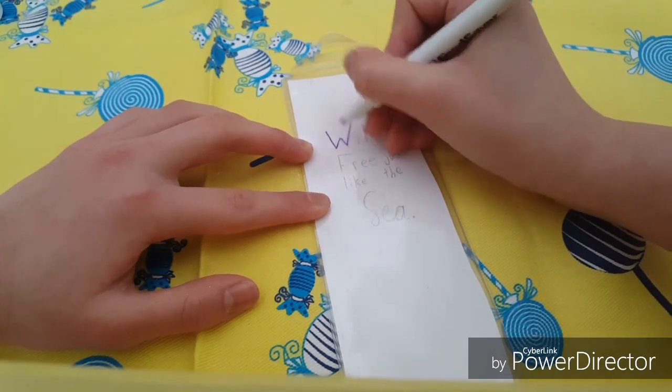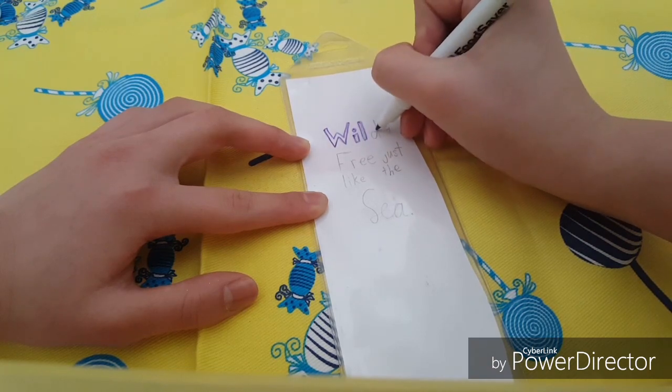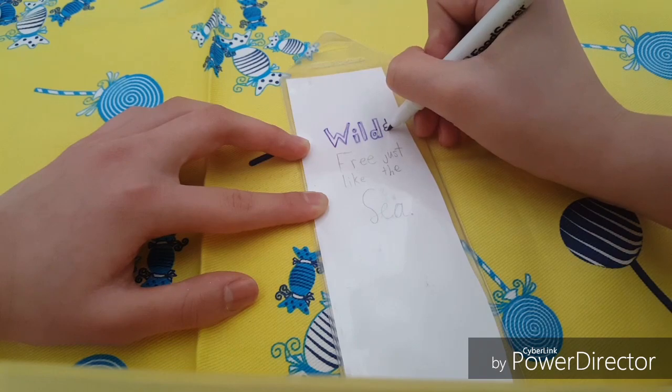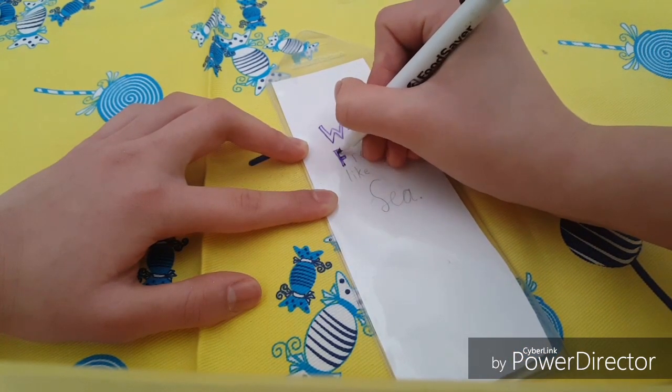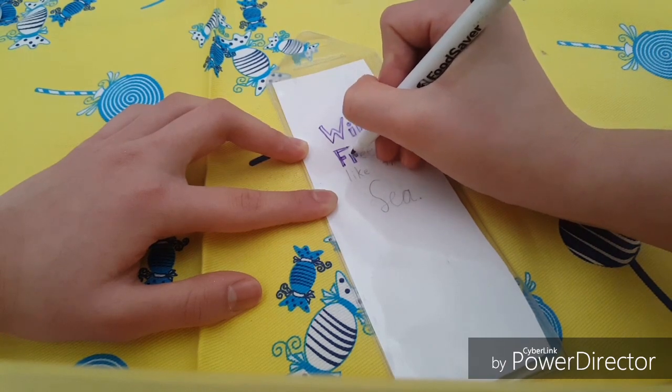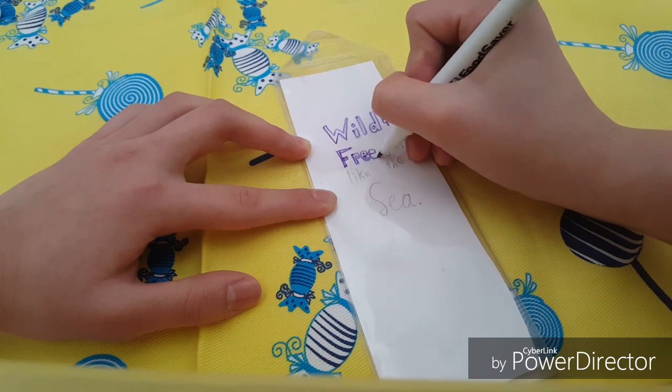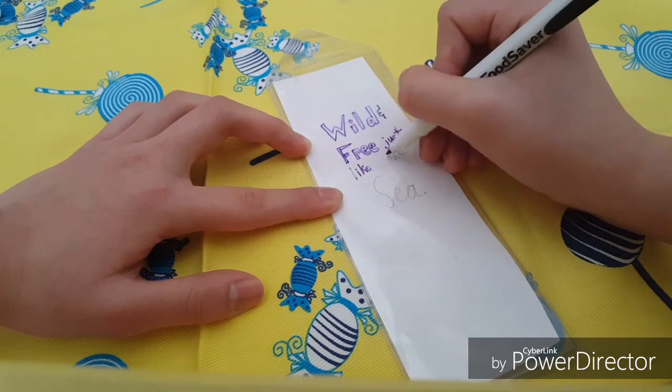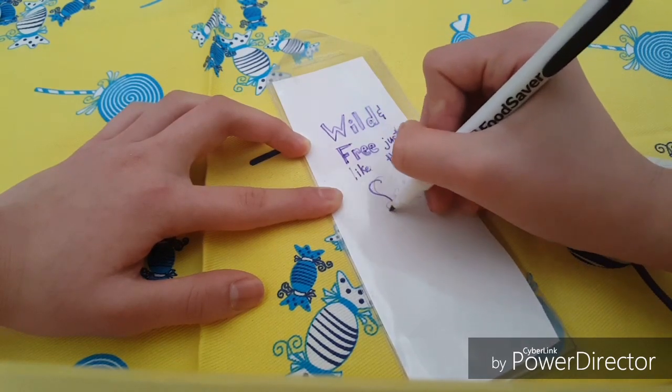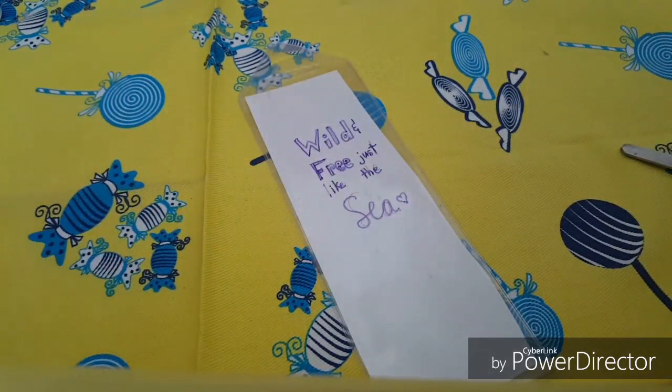So after you cut out your paper, you can use your plastic writer marker and start drawing on the bookmark cover so you can have your quote. I don't even know what I'm saying anymore.